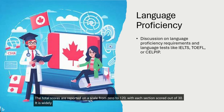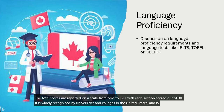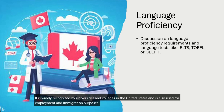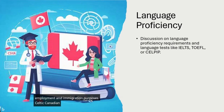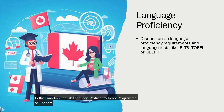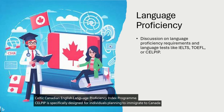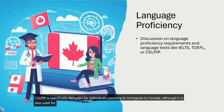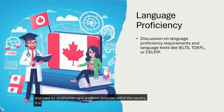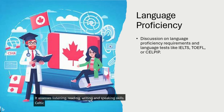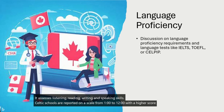TOEFL is widely recognized by universities and colleges in the United States and is also used for employment and immigration purposes. Third, CELPIP (Canadian English Language Proficiency Index Programme): CELPIP is specifically designed for individuals planning to immigrate to Canada, although it is also used for employment and academic purposes within the country. It assesses listening, reading, writing, and speaking skills. CELPIP scores are reported on a scale from 1 to 12, with a higher score indicating better proficiency.